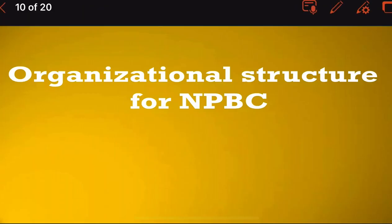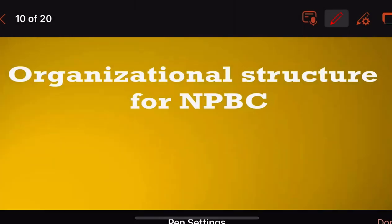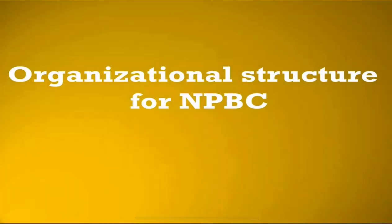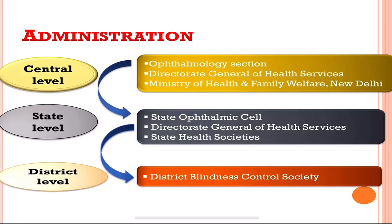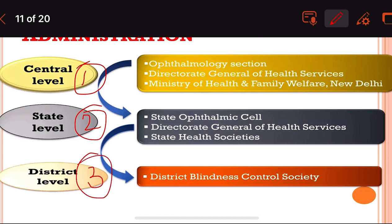In Part 2, we will be dealing with the organizational structure in the first place. The organizational structure — that is, the administration — is divided into three levels: central level, state level, and district level.